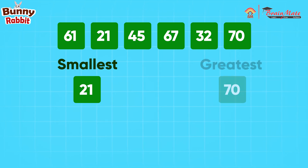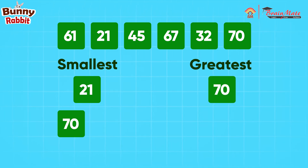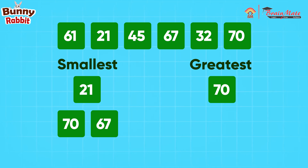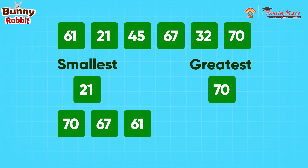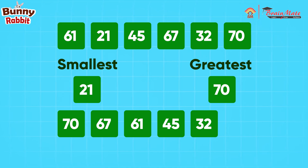Greatest number is 70. Descending order is 70, 67, 61, 45, 32, 21.